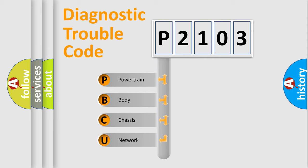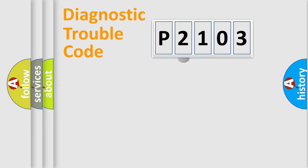We divide the electric system of automobile into four basic units: Powertrain, Body, Chassis, and Network. This distribution is defined in the first character code.